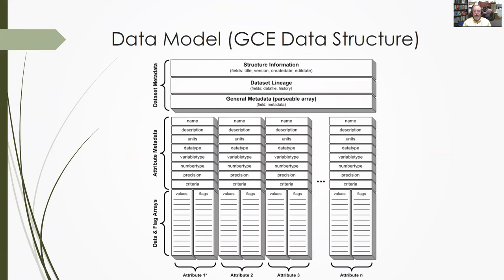Here's an illustration of the overall design of this data model. At the dataset level, there's dataset-level metadata for the whole dataset in these files — housekeeping information, lineage information, and a large parsable array of actual documentation metadata. Then there's an unbounded set of attributes that include detailed attribute metadata, names, description units, and such, and then paired value and flag arrays managed along with that metadata. This is a nice overview of the content modeled by this toolbox, handled essentially as a black box behind the scenes, so you don't need to know the details.